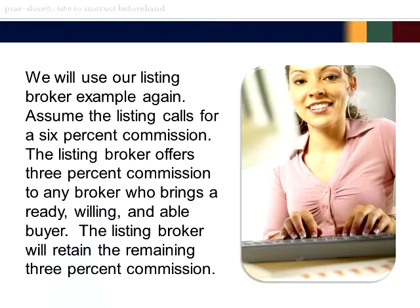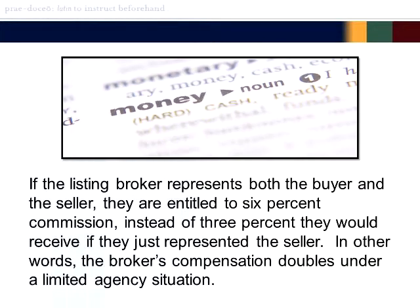We will use our listing broker example again. Assume the listing calls for a 6% commission. The listing broker offers 3% commission to any broker who brings a ready, willing, and able buyer. The listing broker will retain the remaining 3% commission. If the listing broker represents both the buyer and the seller, they are entitled to 6% commission instead of the 3% they would receive if they just represented the seller. In other words, the broker compensation doubles under a limited agency situation.